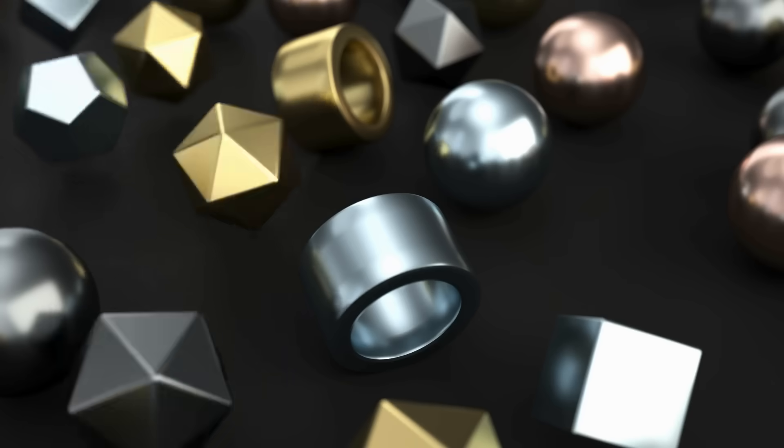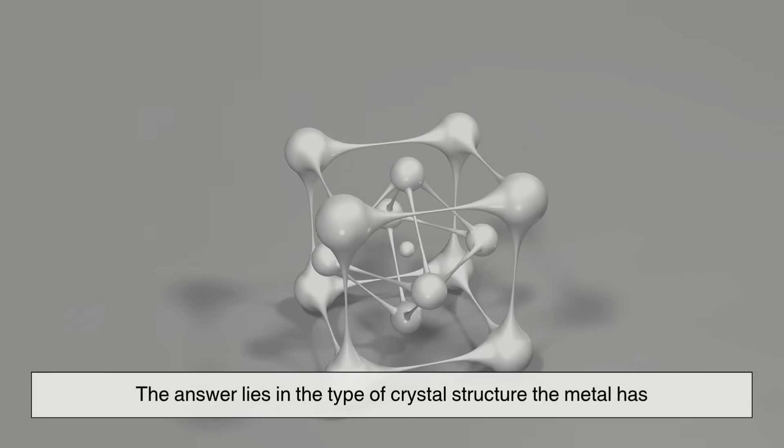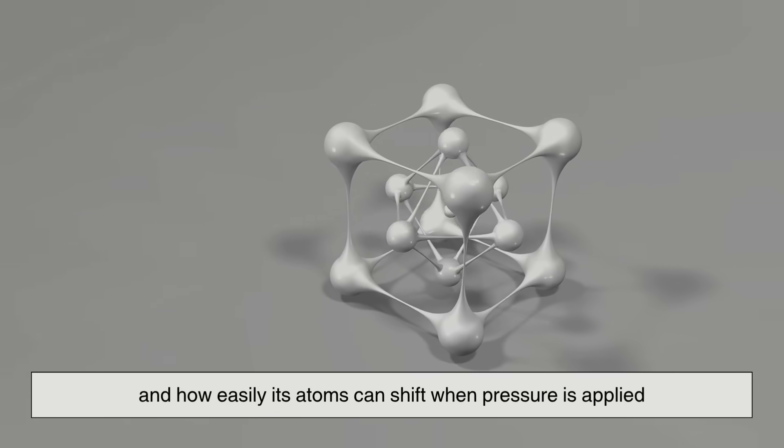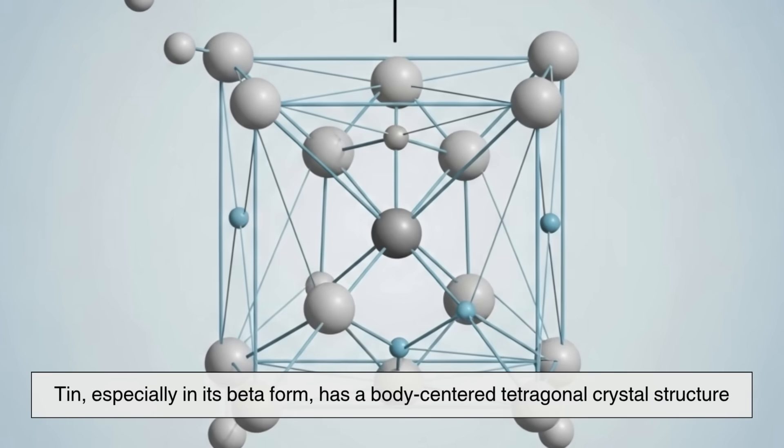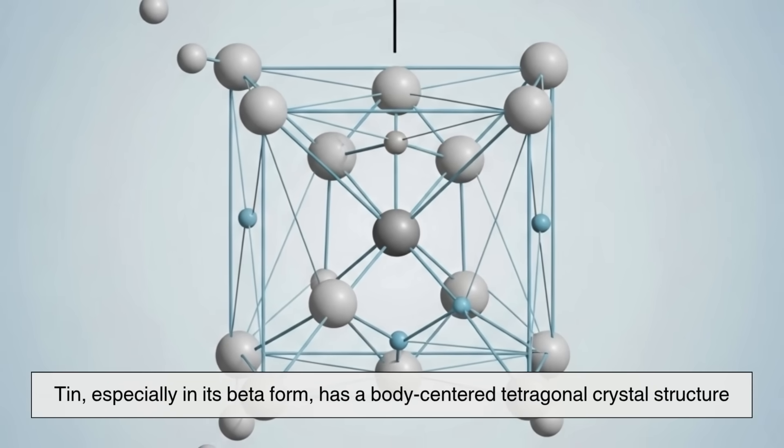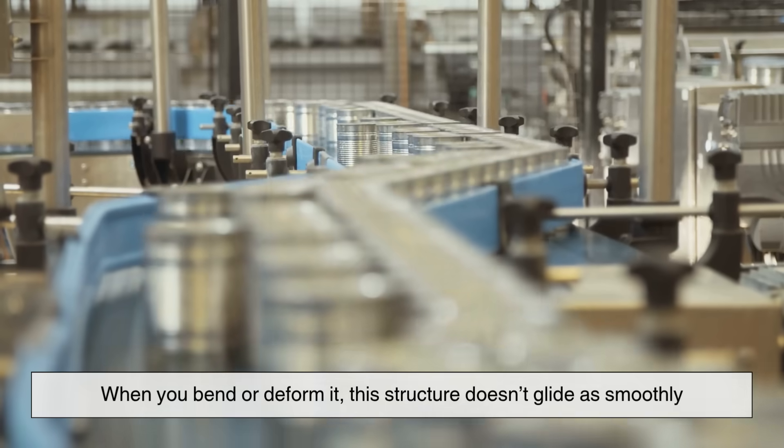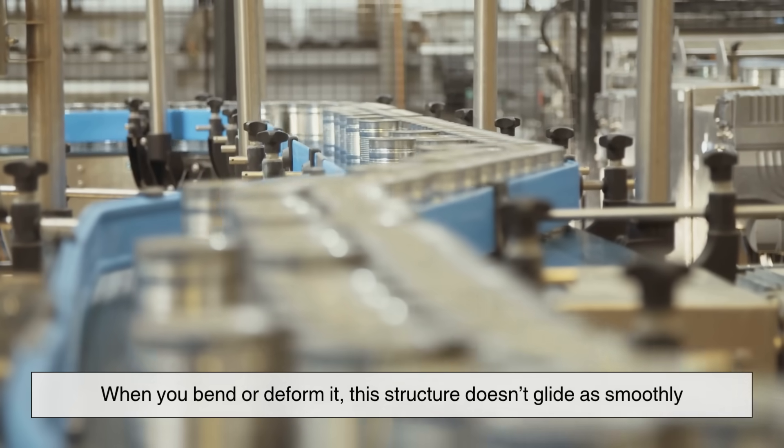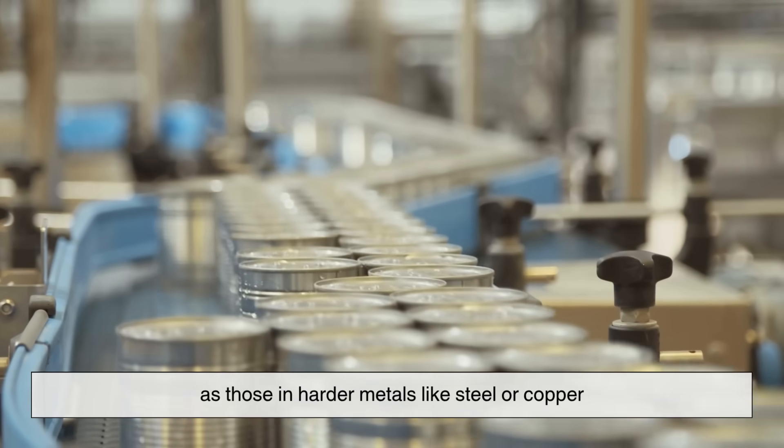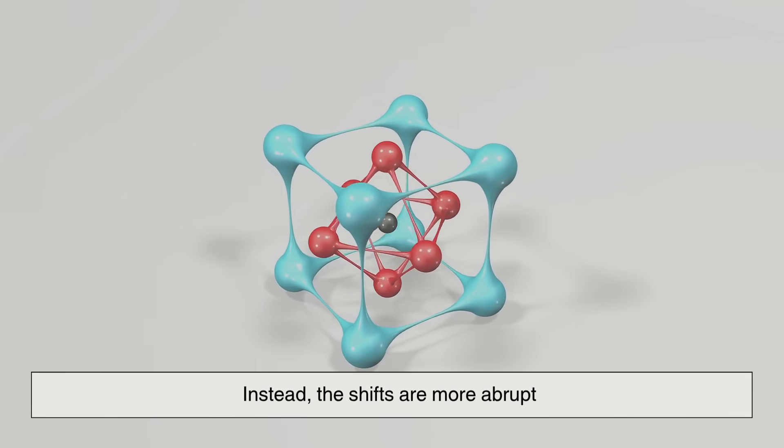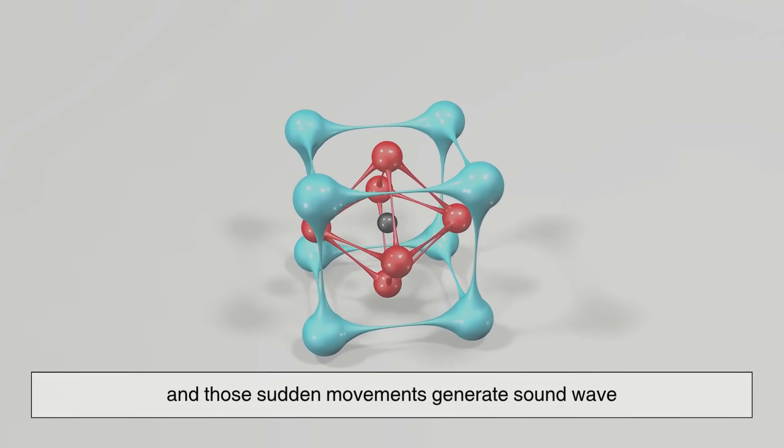So why don't all metals make this sound? The answer lies in the type of crystal structure the metal has and how easily its atoms can shift when pressure is applied. Tin, especially in its beta form, has a body-centered tetragonal crystal structure. When you bend or deform it, this structure doesn't glide as smoothly as those in harder metals like steel or copper. Instead, the shifts are more abrupt and those sudden movements generate sound waves.